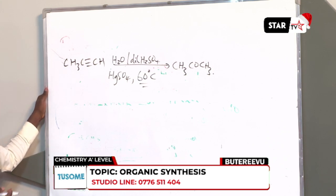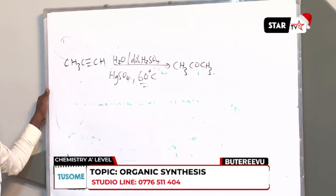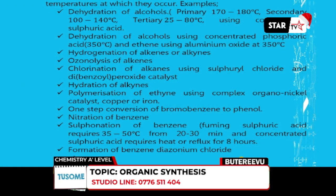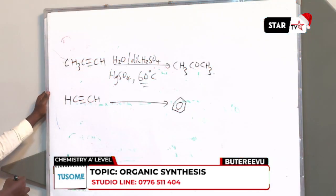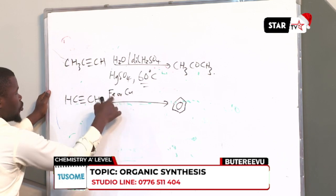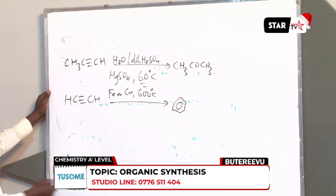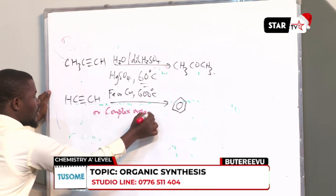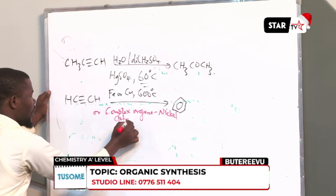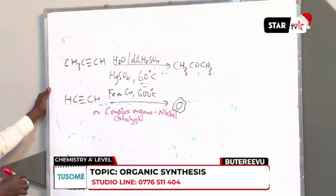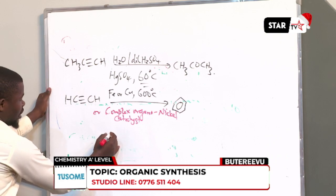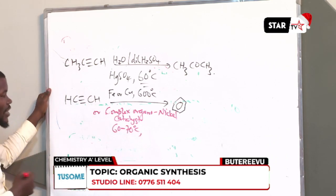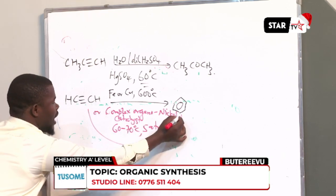The other temperature-specific reaction involves polymerization of ethyne to form benzene. This reaction involves the use of iron or copper at 600 degrees Celsius. Alternatively, you may use complex organonickel catalyst, in which case the reaction requires a temperature between 60 to 70 degrees Celsius and a pressure of 5 atmospheres. You will still achieve the same conversion.